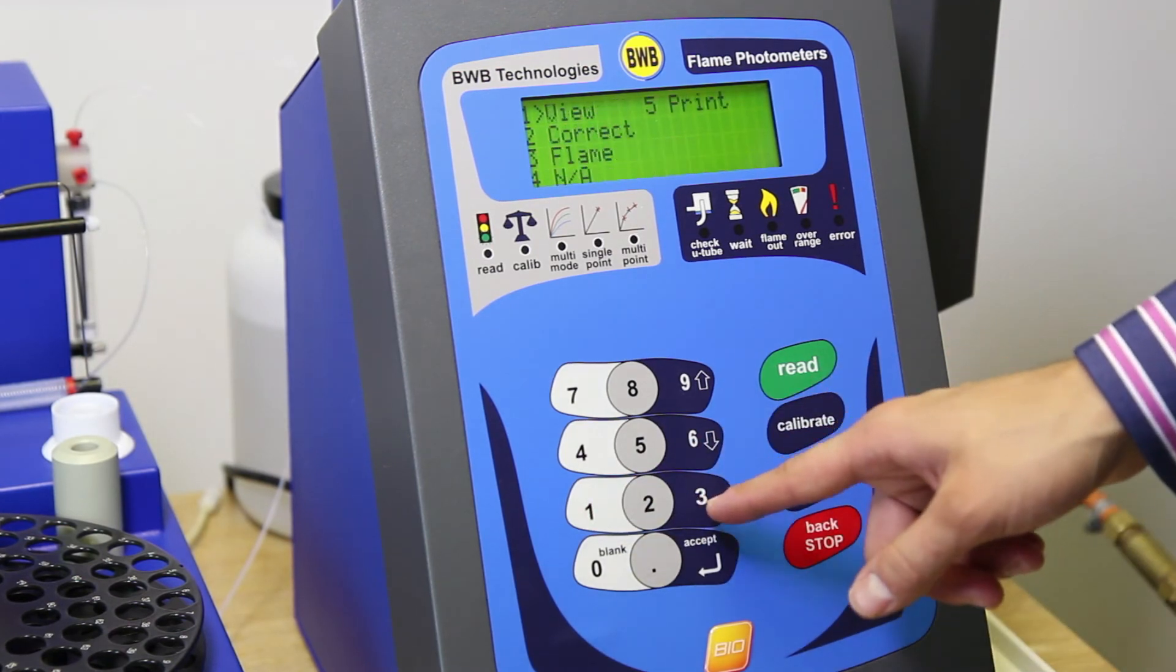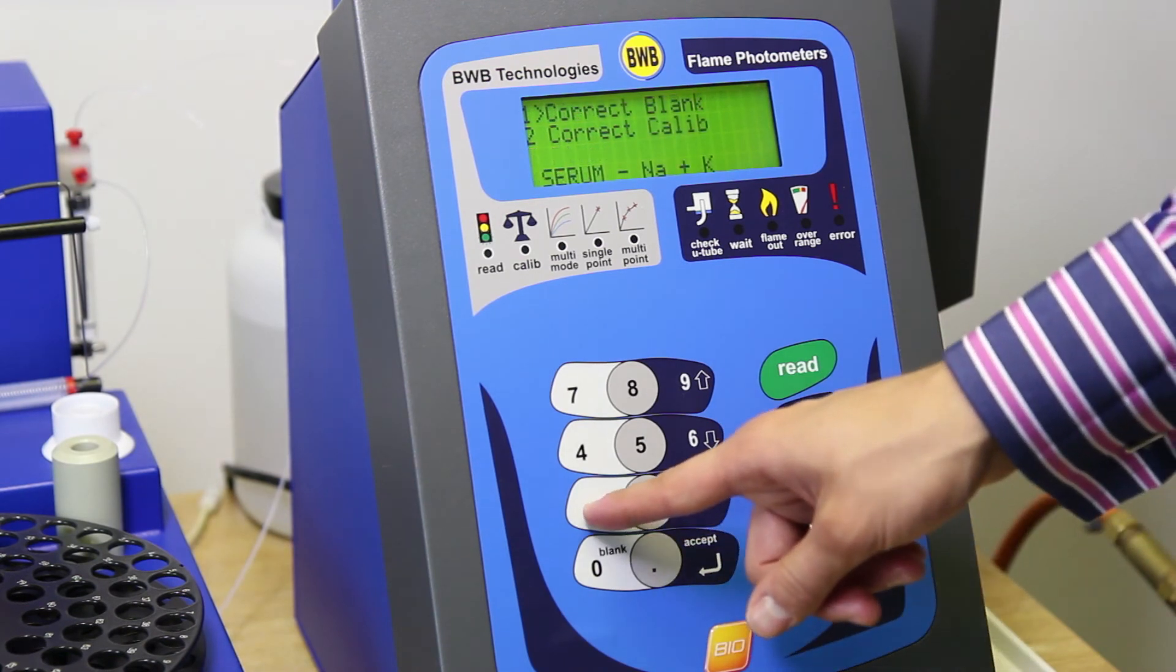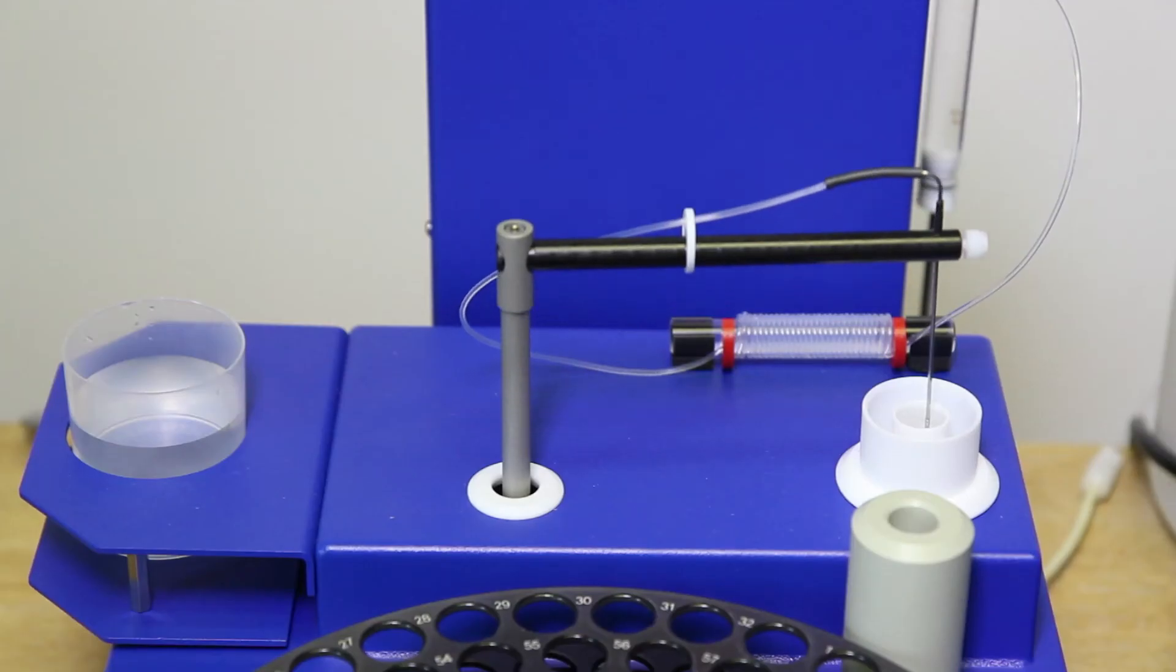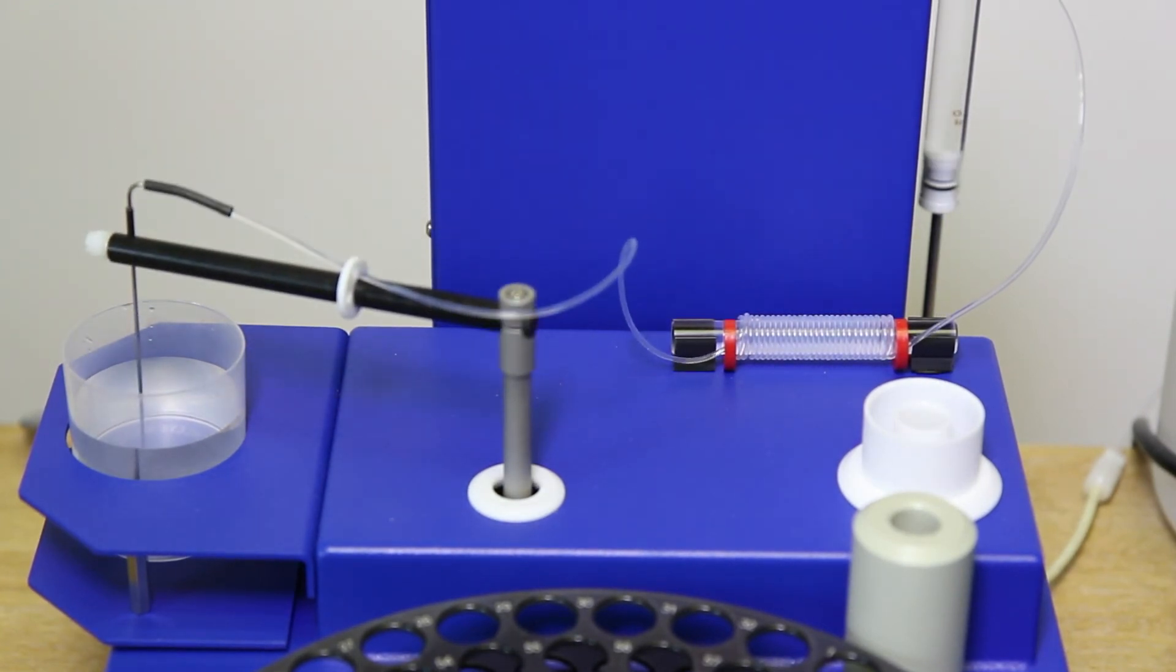Select Calibrations. Select Correct. And finally select Correct Blank. The AFHS will now read the sample solution and will correct the blank reading upon completion.